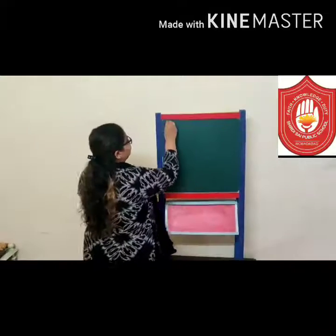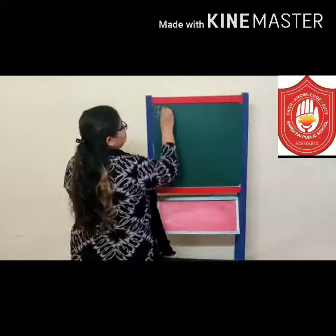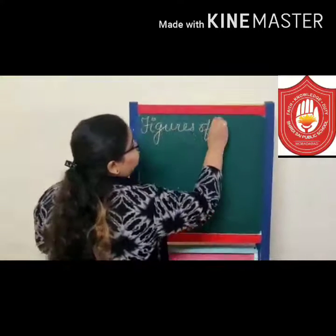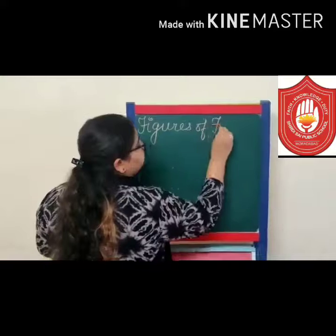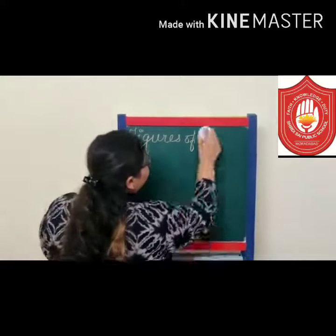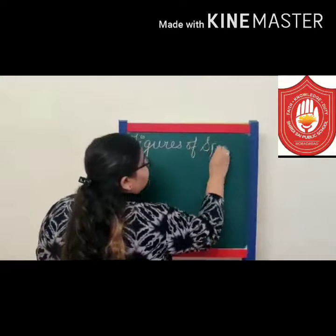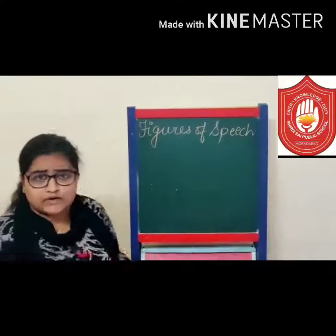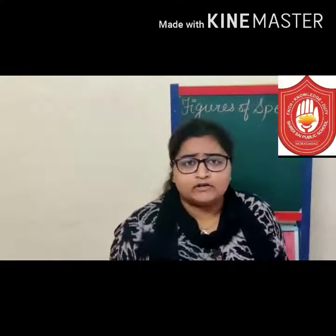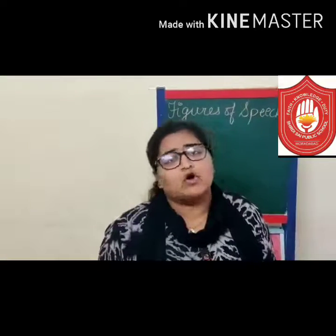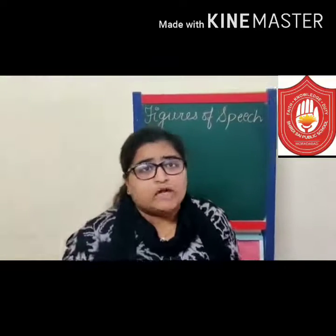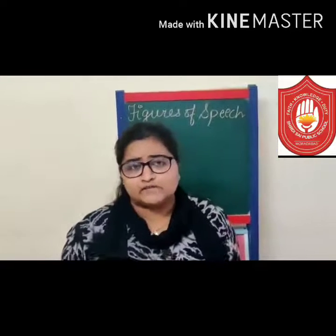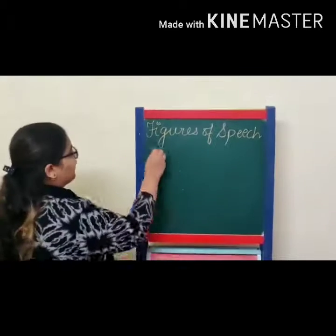So let us begin. First of all, you must have read the various names by which the poetic devices can be called — that is figures of speech, literary devices, poetic devices, or rhetorical devices. Let us begin with the first poetic device that you must have read, that is rhyme.